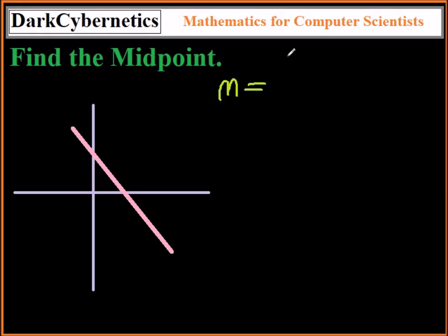To find the midpoint between two points on the Cartesian plane, we simply need to know the sum of the two points, where M is the midpoint, where we have x1 plus x2 over 2.